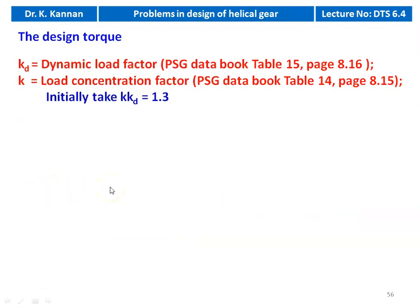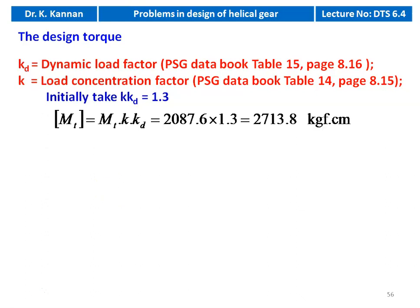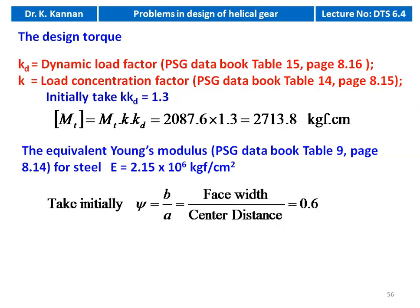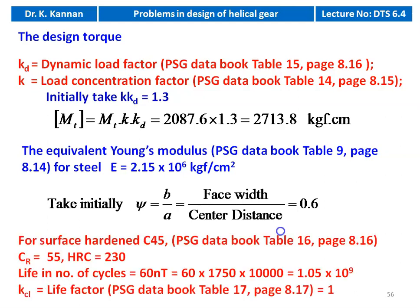We calculate the design torque. Initially we assume K×KD = 1.3, where K is the load concentration factor and KD is the dynamic load factor. Design torque = MT × KKD = 2087.6 × 1.3 = 2713.8 kgf·cm. We take equivalent Young's modulus for steel: E = 2.15 × 10^6 kgf/cm² from table 9, page 8.14. We take psi = B/A = 0.6.